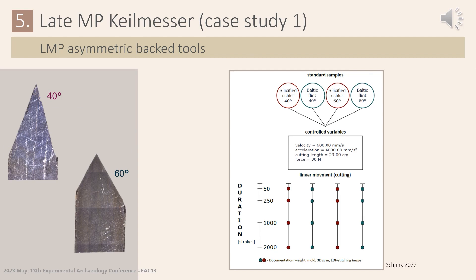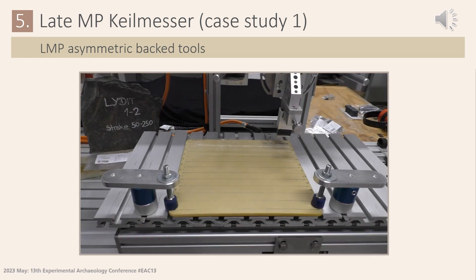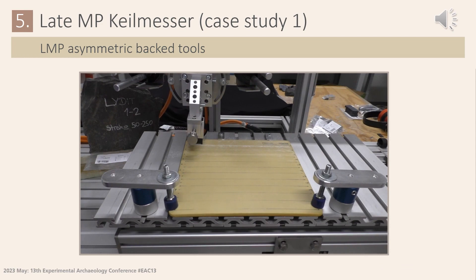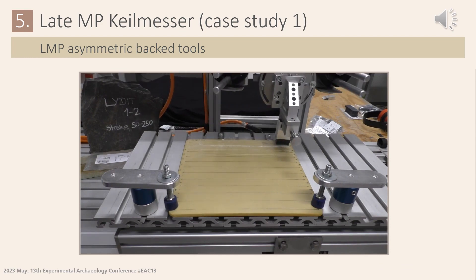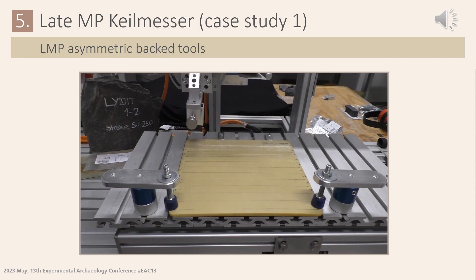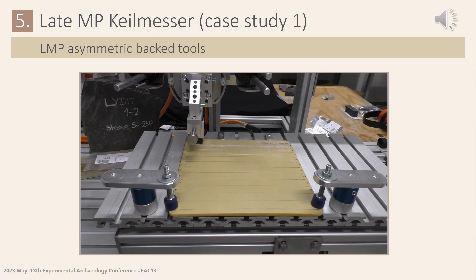To address these questions, we designed an experiment to test two of the raw materials represented in these assemblages — flint and silicified schist — and two predefined standard edge angles of 40 and 60 degrees, based on 3D measurements of archaeological artifacts. The sequential experiment, a bidirectional movement that simulates a cutting task, was conducted using a similar velocity, acceleration, force, and cutting length. Here you can see a descriptive diagram of the experimental organization and design. In second-generation experiments, standard samples are used to minimize and control as many variables as possible. In this case, we used standard machine-cut samples as well as a standard contact material, which in this case is a synthetic bone plant.